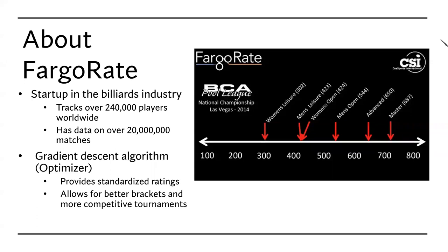A little bit about FargoRate: FargoRate is in the billiards industry. They track over 240,000 players worldwide and have data on over 20 million matches. As you can see, this is a picture of their rating scale. About 500 is an average player, and the pros go up to 600 or 700. They provide standardized ratings, which allows for better brackets and more competitive tournaments. People all around the world can see their rating and how they rank with other pro players or anyone in different leagues around the world.